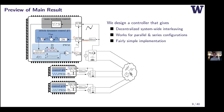Rather than keep you in suspense, here's the controller right now. We're going to give you a controller that can be implemented in a decentralized fashion and works for both parallel and series configurations — the implementation looks nearly identical in both cases. It's quite simple — just a proportional controller — and the reason we keep it simple is because it lives in this blue box where we can only do simple multiplication. That's it.